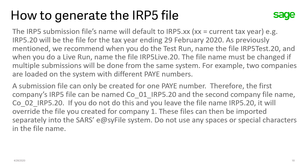The submission file can only be created for one pay-as-you-earn number. Therefore, the first company IRP5 file can be named Company1_IRP5.20 and the second Company2_IRP5. This refers back to the point that regardless of which company you are in, the file name created will always be IRP5.21 or .20, so you have to give it a unique name. Also, do not use spaces or special characters in the file name.